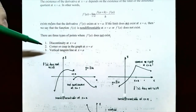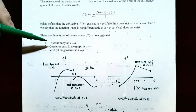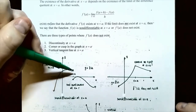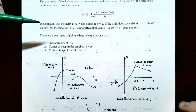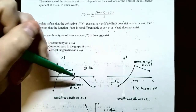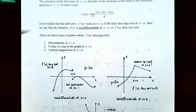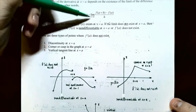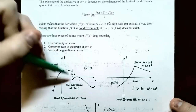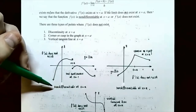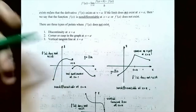There are three types of points where the derivative at x equals a does not exist. Number one: if the function is not continuous at x equals a, you can't find the derivative there. For example, if the graph has a jump discontinuity, a hole, or a vertical asymptote, you're approaching one value from the left and a different value from the right. Since the two-sided limit does not exist, the derivative does not exist, and the function is non-differentiable at x equals a.